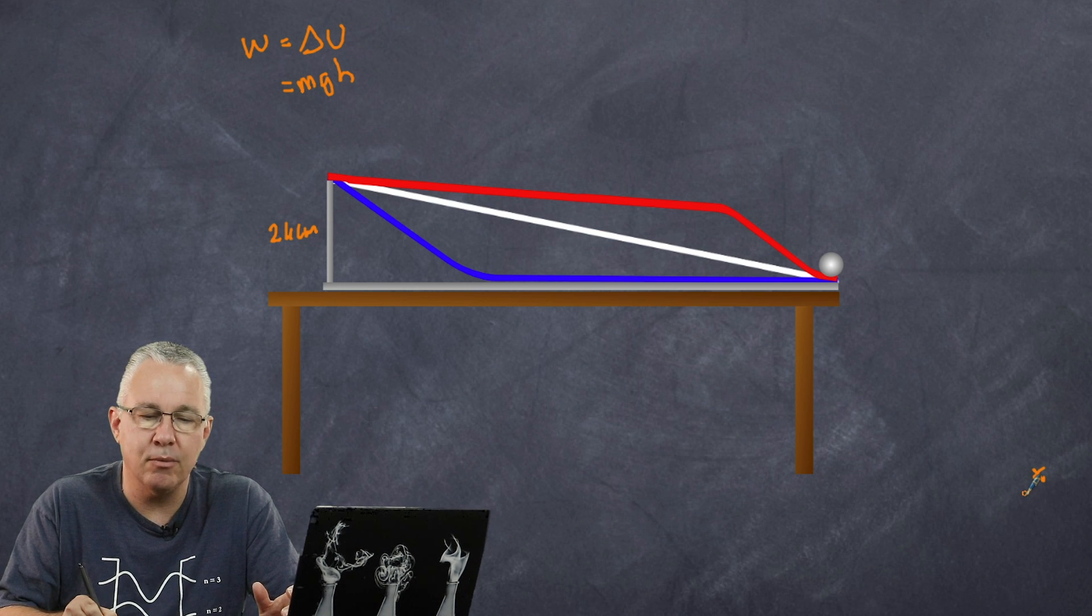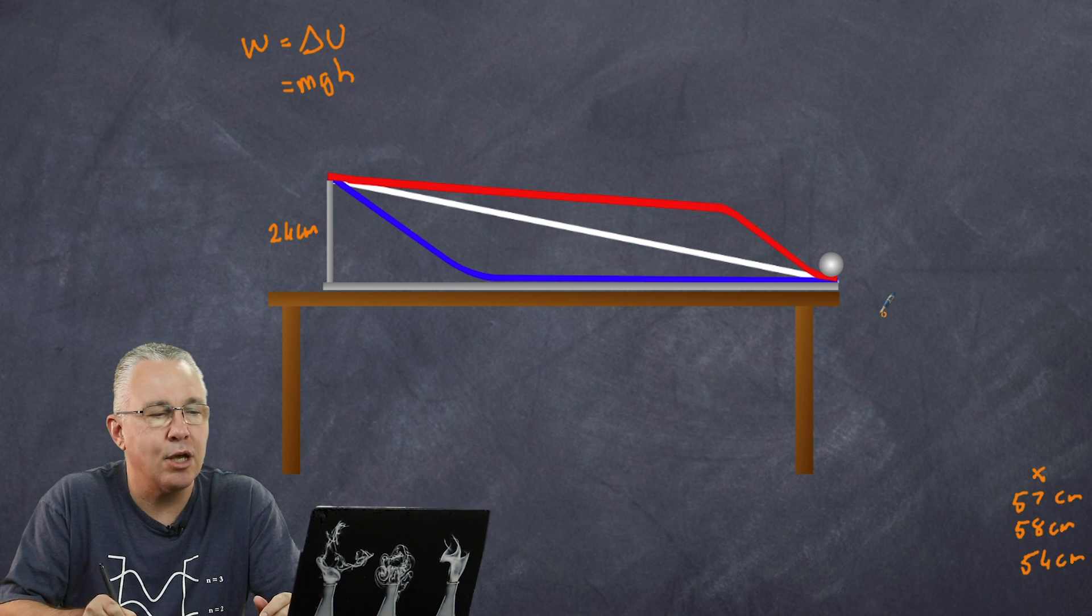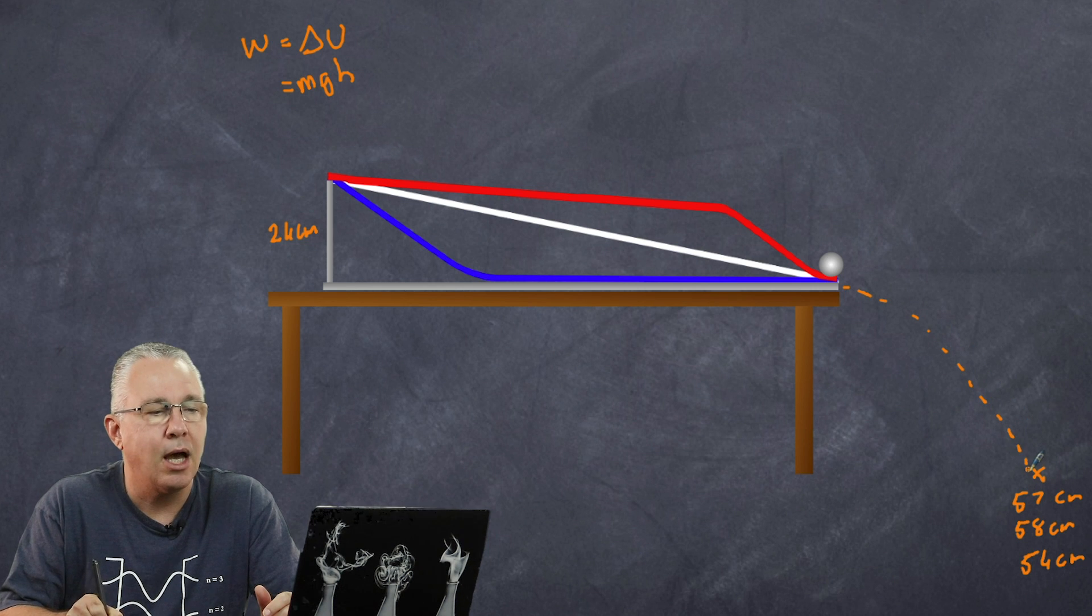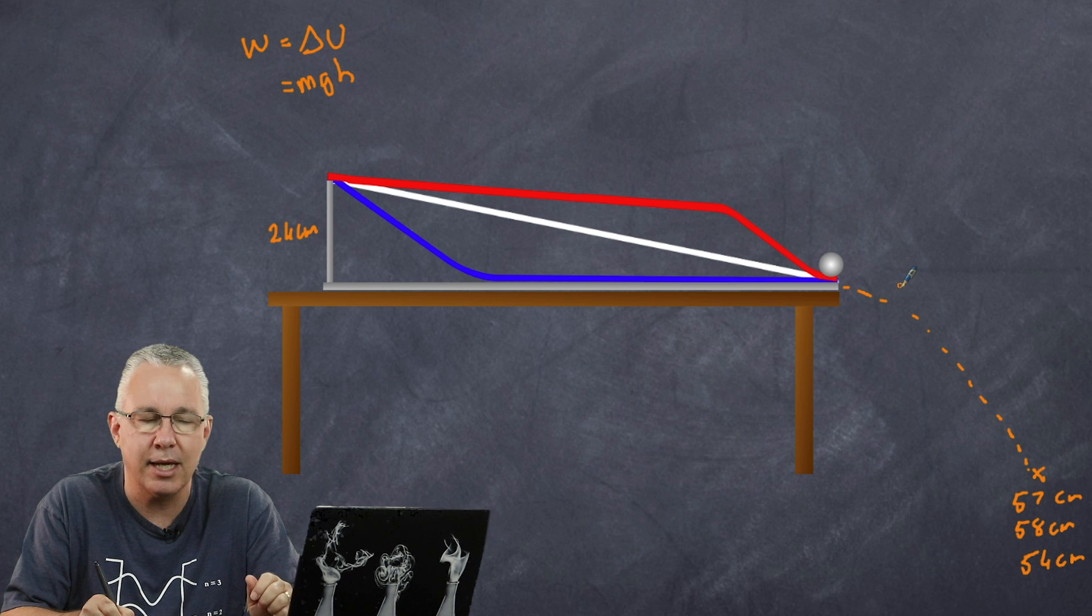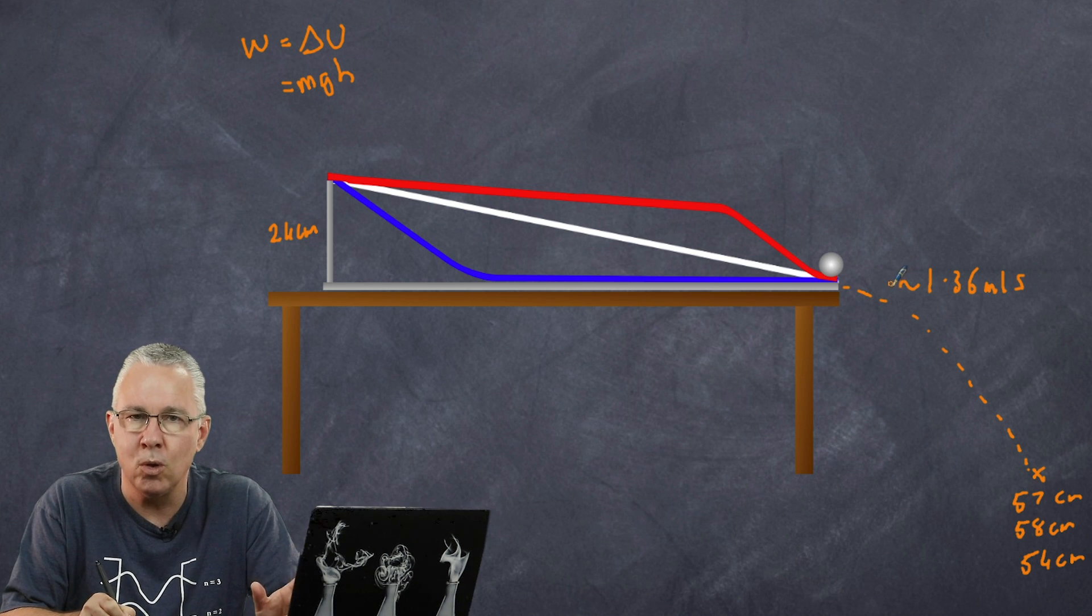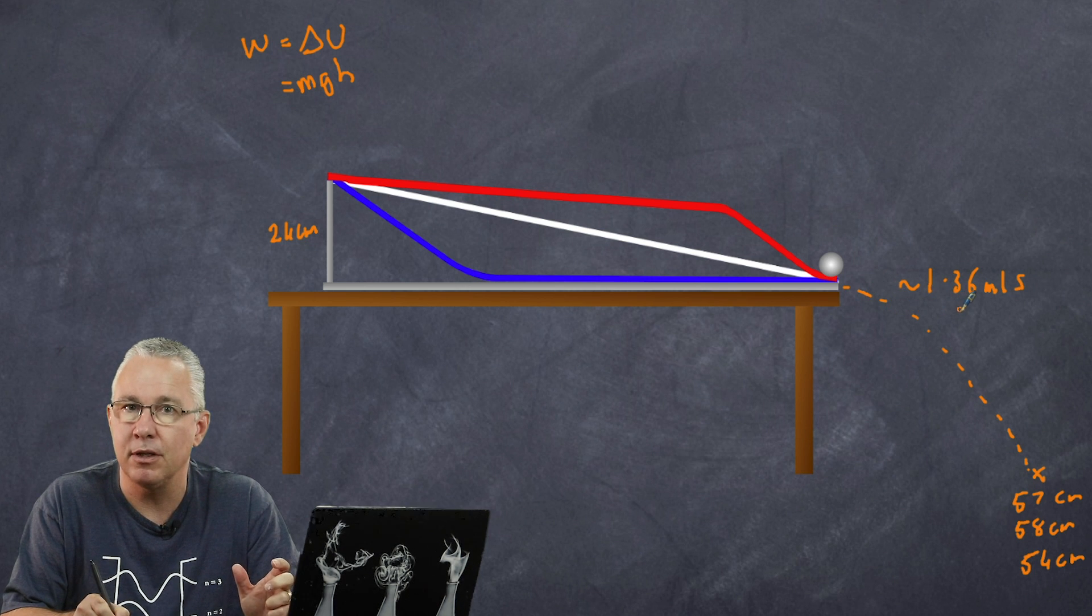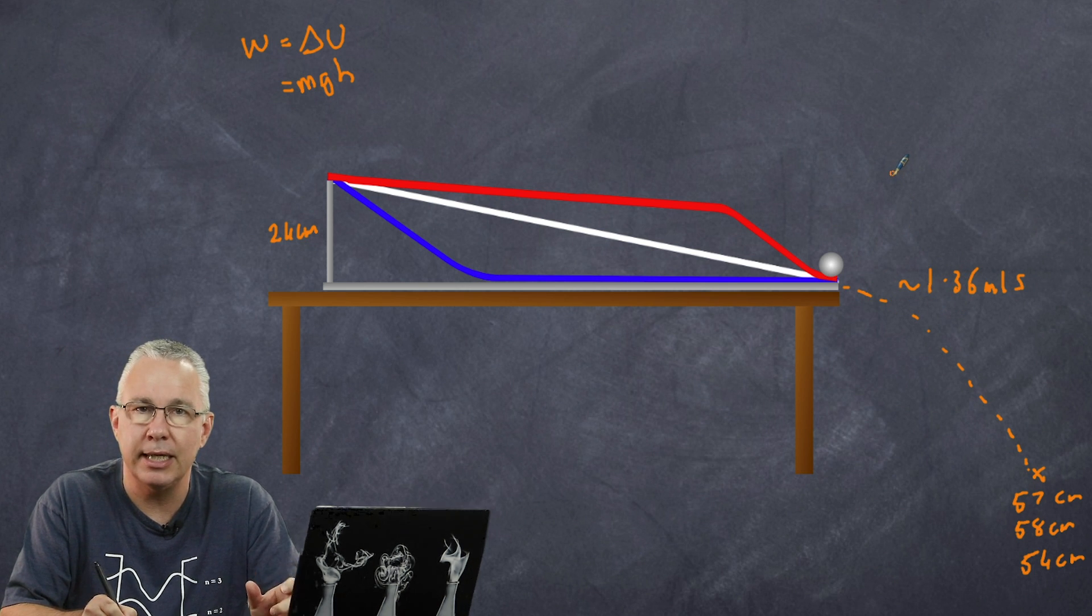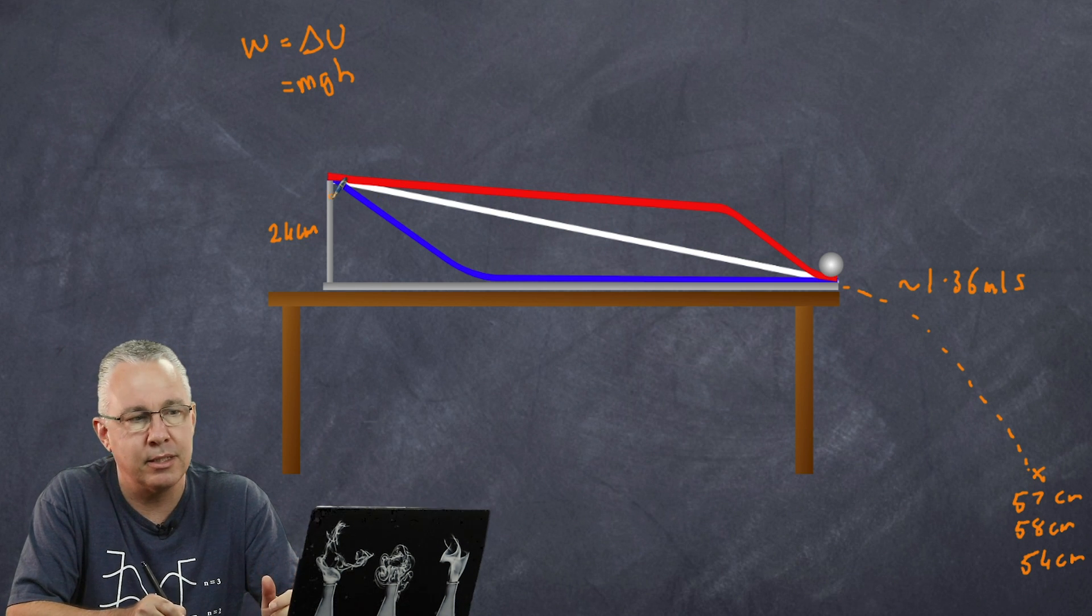Now the blue ball and the white ball landed at 57 and 58 centimeters. The red ball was slightly different but it's roughly the same. And so because they traveled under projectile motion, I can work out the velocity at which they left. Now I'm not going to do the calculations here, but the calculations end up being around 1.36 meters per second. So in other words, the balls all had the same mass, they all left at the same velocity, so they all had the same kinetic energy. In fact, they have the same change in kinetic energy because the kinetic energy at the top of the ramp is zero.